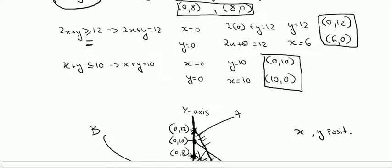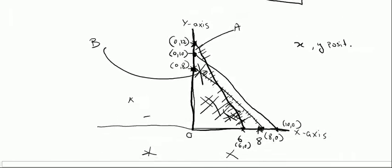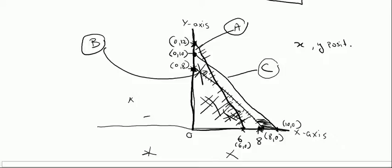The third condition says x plus y less than or equal to 10, meaning the area must be below line C. So the feasible region is above line A, above line B, and below line C. This gives us the only possible region which we must shade.